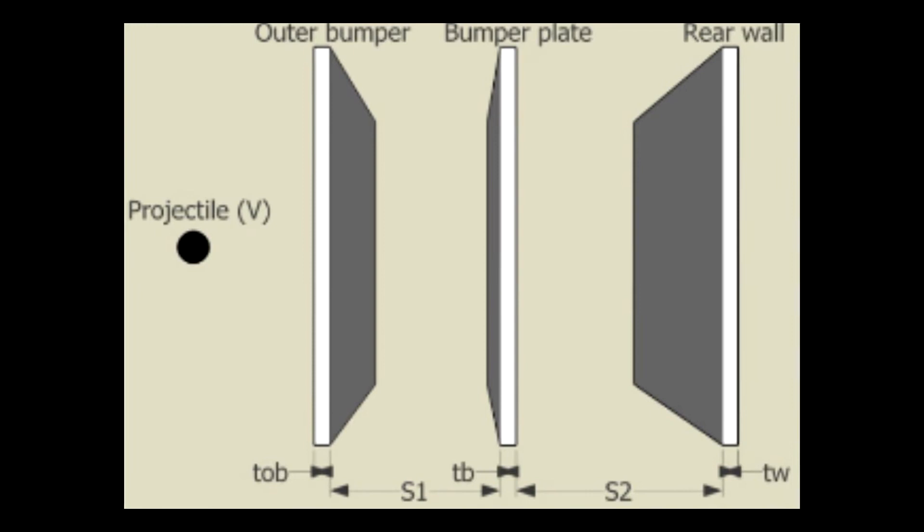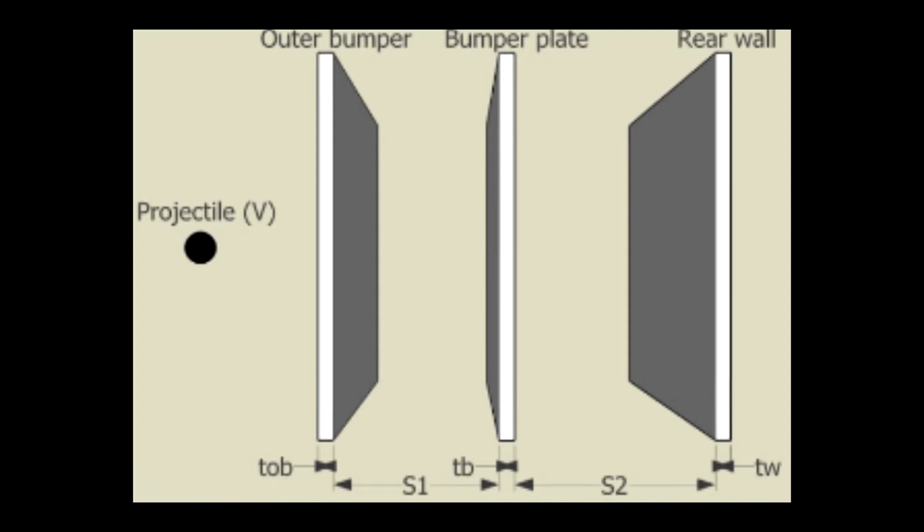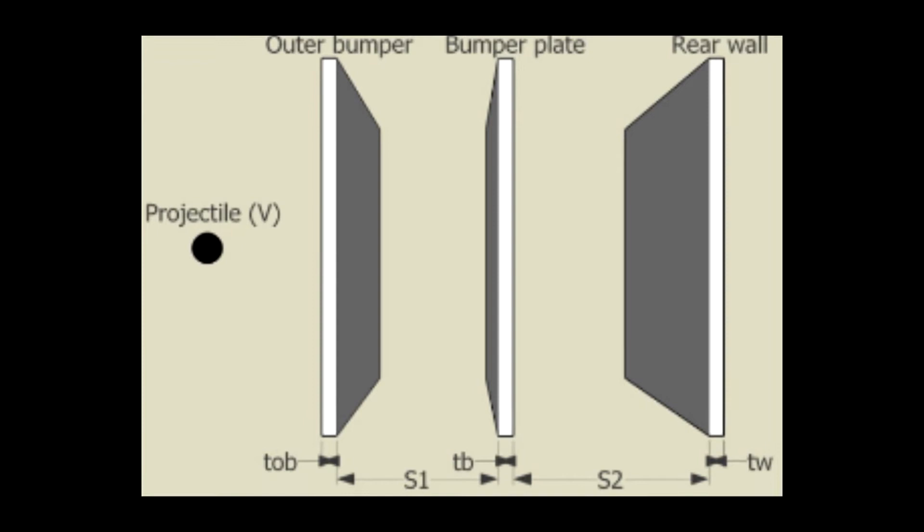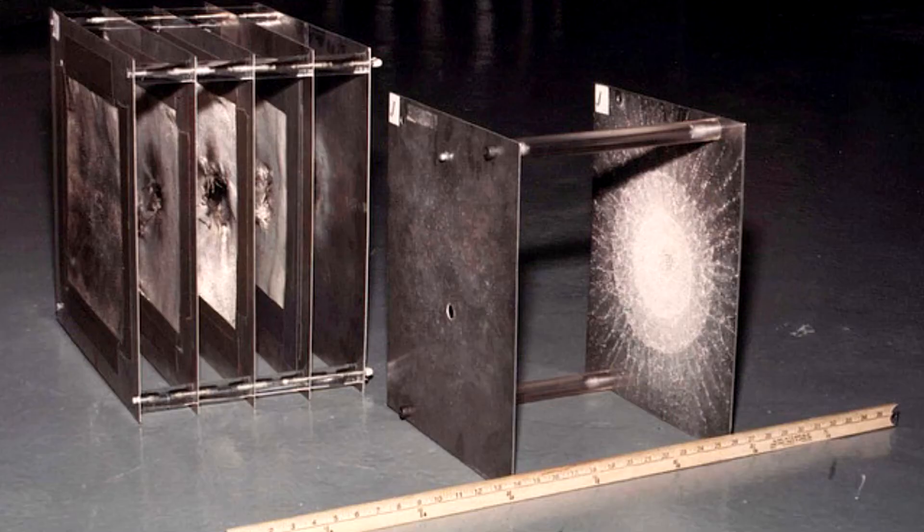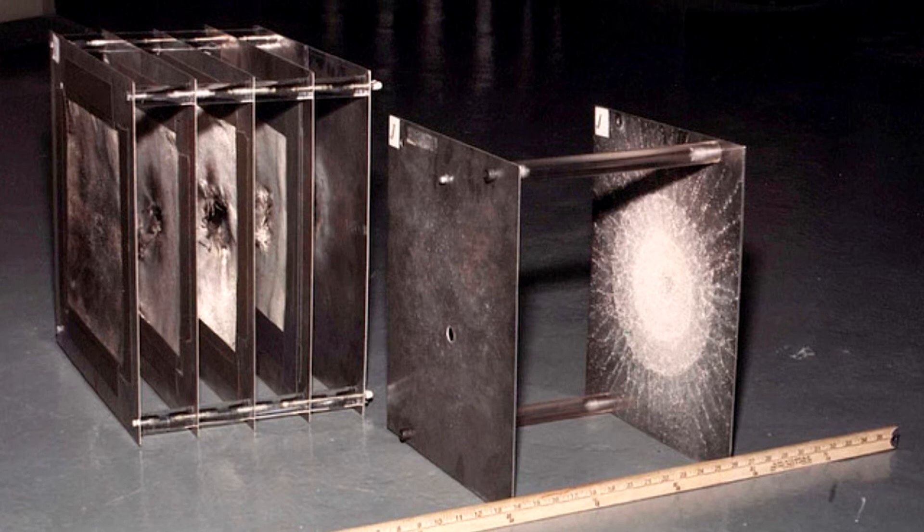In the most basic terms, a Whipple Shield employs a primary layer which, upon being impacted by an object, breaks the projectile into small pieces. Following the primary layer, there's a standoff and empty space between the first and second layers of the shield to allow for a buffer area for debris to spread. The debris scatters and strikes the rear wall, ideally having slowed enough not to cause the failure of the rear wall.